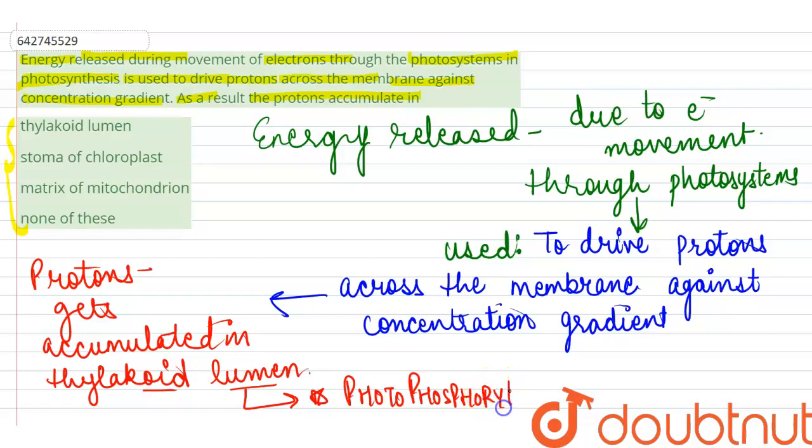So photophosphorylation is the primary function involved by the thylakoid lumen. So our correct option would be that as a result, the protons get accumulated in the thylakoid lumen. So thylakoid lumen is our correct option.